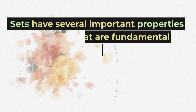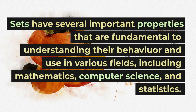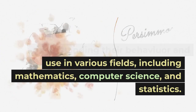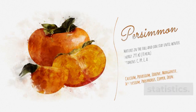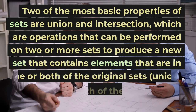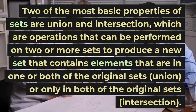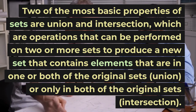Sets have several important properties that are fundamental to understanding their behavior and use in various fields, including mathematics, computer science, and statistics. Two of the most basic properties of sets are union and intersection, which are operations that can be performed on two or more sets to produce a new set that contains elements that are in one or both of the original sets (union), or only in both of the original sets (intersection).